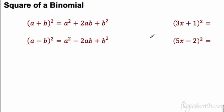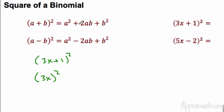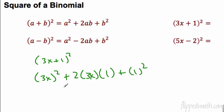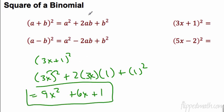Let's look at another one: the square of a binomial. Here's the rule — we have 3x plus 1 squared. It equals a squared, which is 3x squared, plus 2ab where a is 3x and b is 1, plus b squared, which is 1 squared. Again, that 2 goes to both — don't forget that. So you get 9x squared plus 6x plus 1. That's fast — I don't have to do double distribute. It's much faster if you can remember these rules.